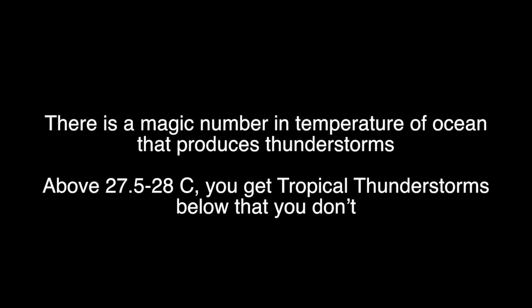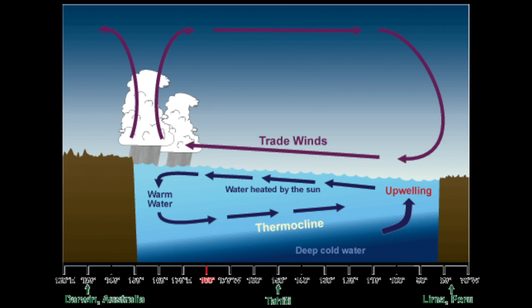There's basically a magic number in the temperature of the ocean that produces thunderstorms. Above about 27.5 to 28 degrees Celsius, you get tropical thunderstorms, and below that you don't. So if there's cool water in the East Pacific and warm water in the West Pacific, all the storms are actually in the West Pacific, which is what you normally see.